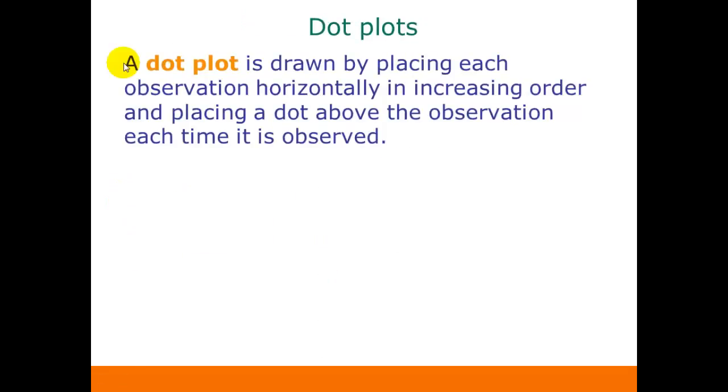The dot plot has each observation on the horizontal axis in increasing order, and we just place a dot above the observation for each time it's observed.